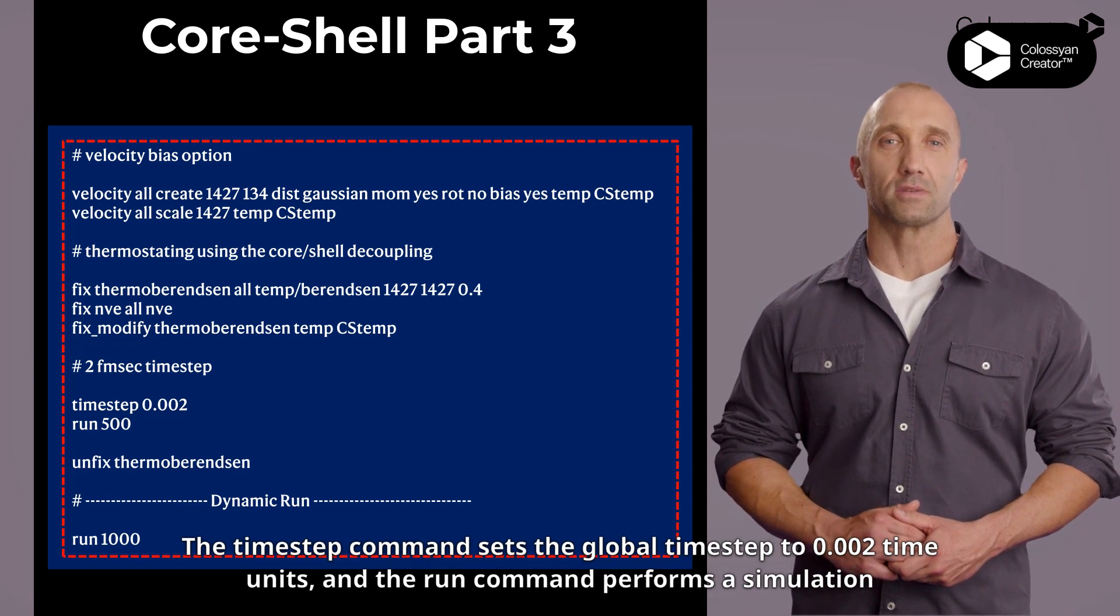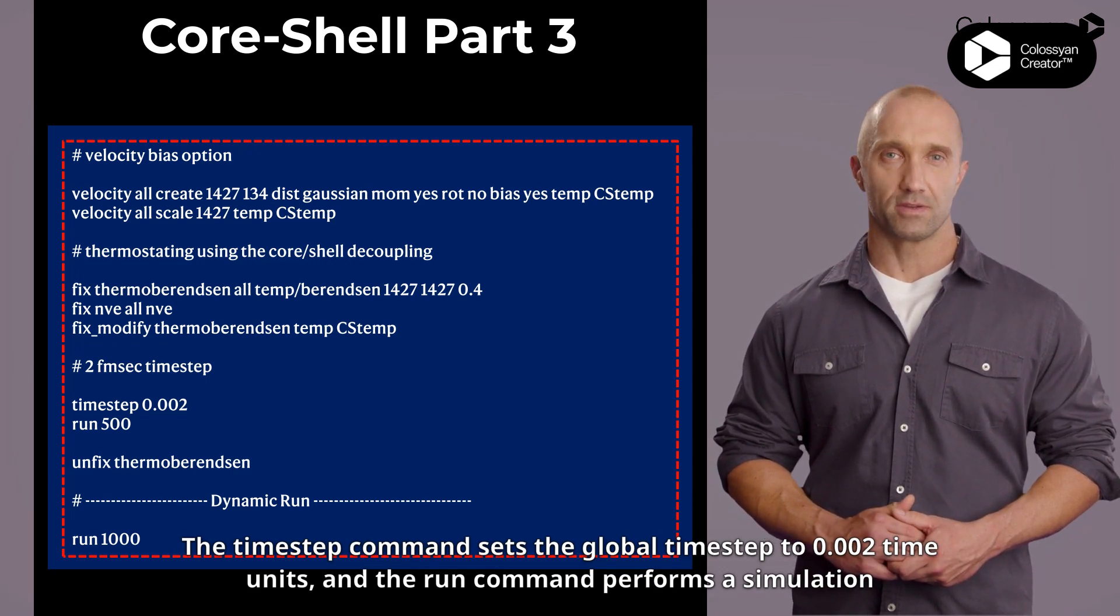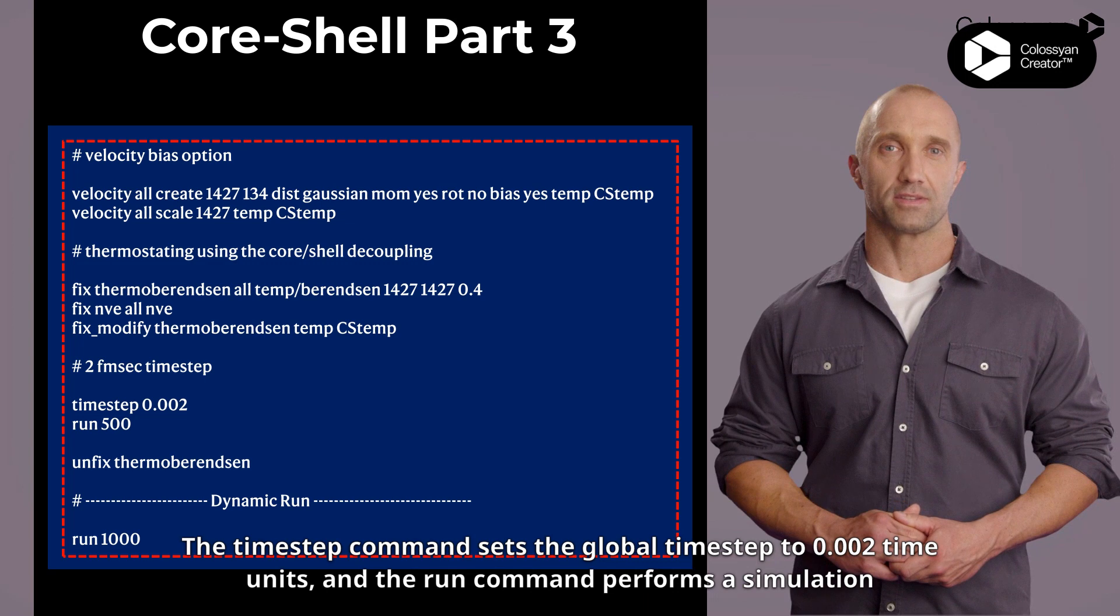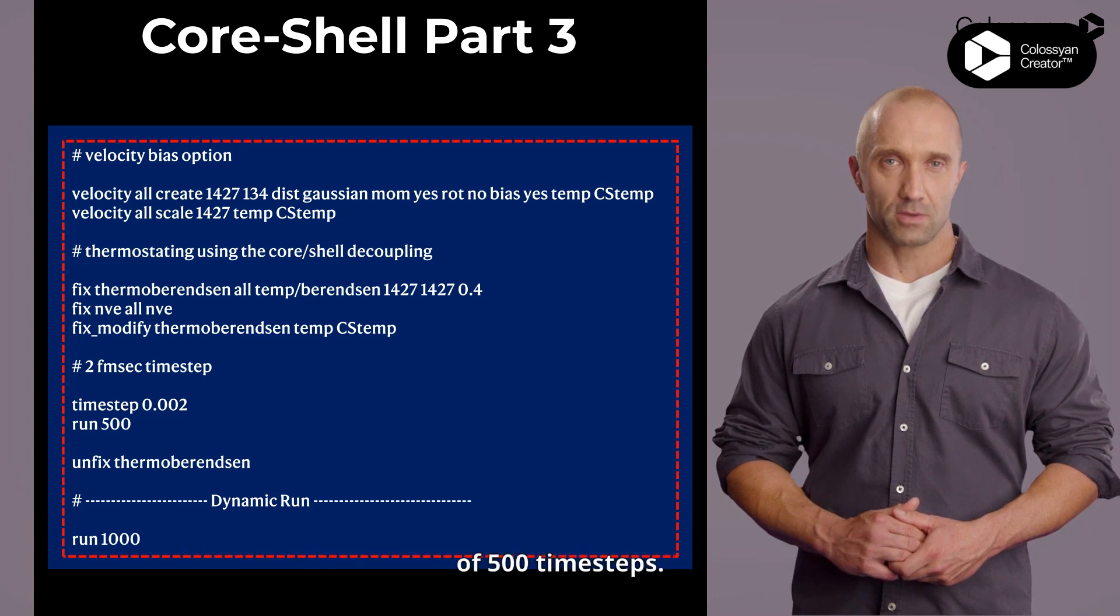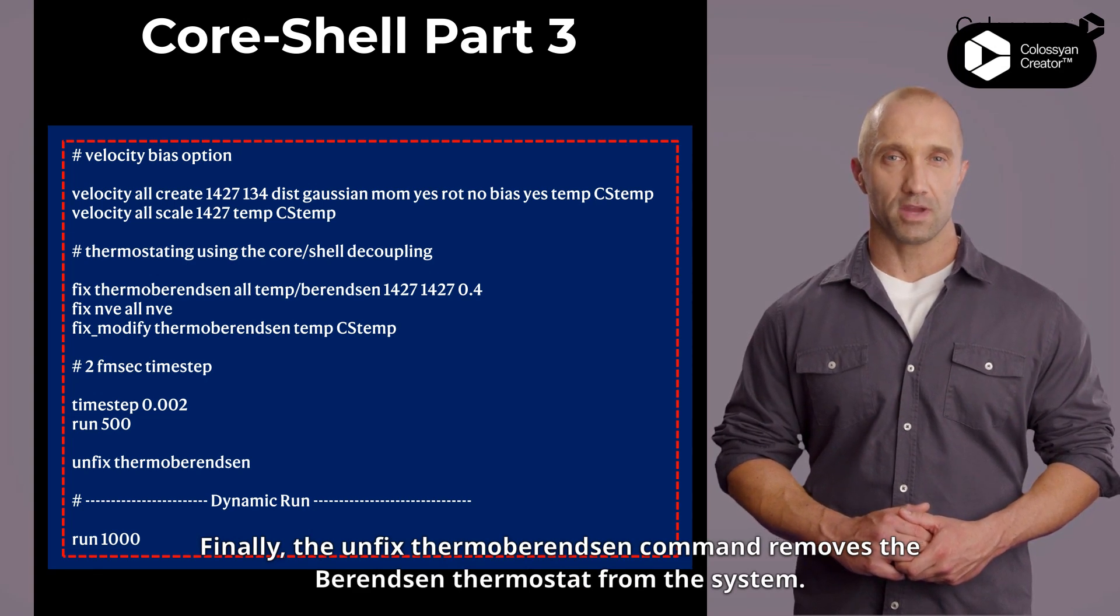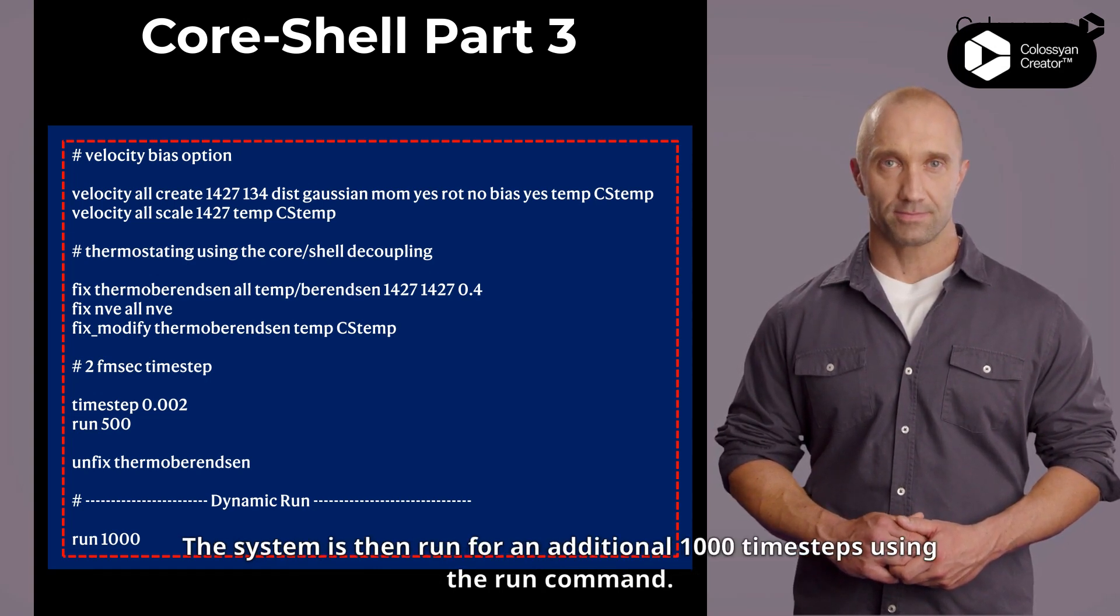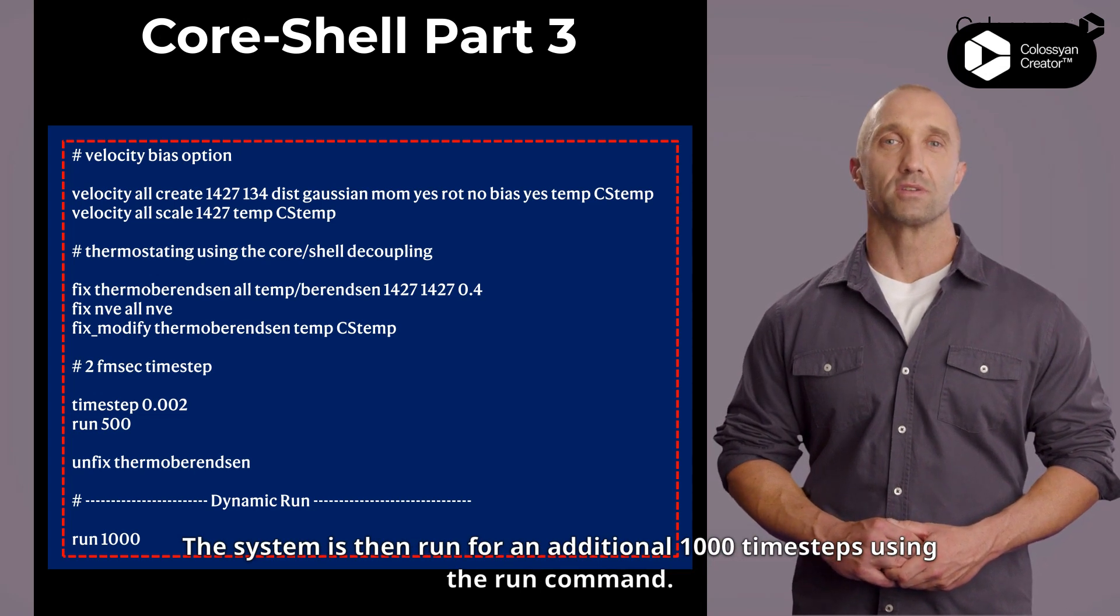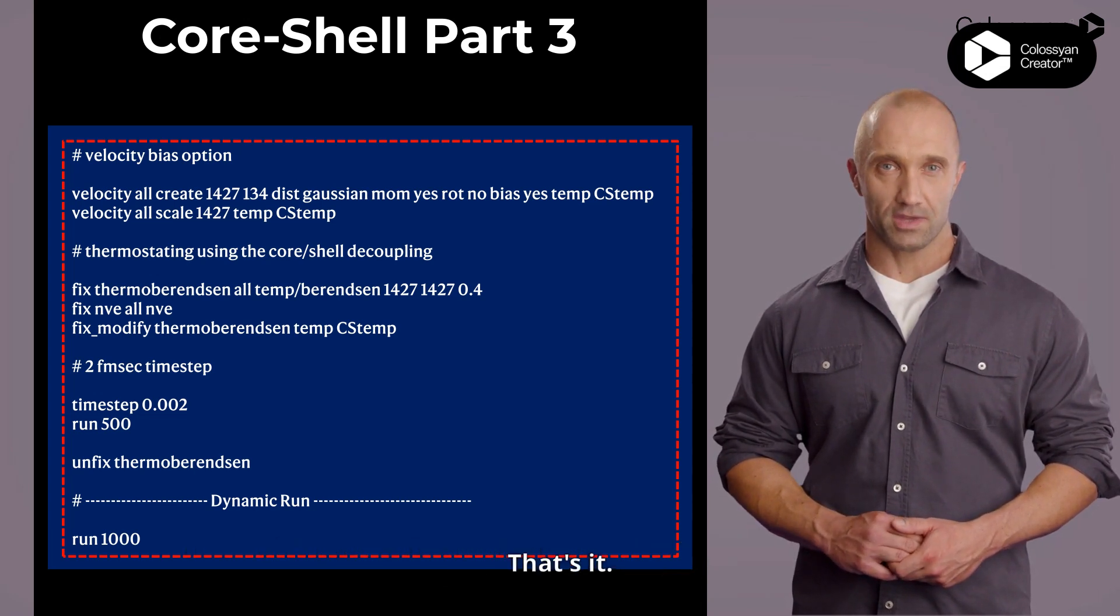The timestep command sets the global timestep to 0.002 time units, and the run command performs a simulation of 500 timesteps. Finally, the unfix thermo Berendsen command removes the Berendsen thermostat from the system. The system is then run for an additional 1000 timesteps using the run command.